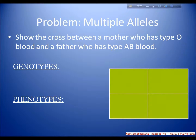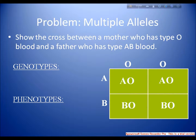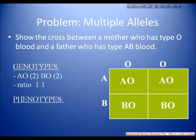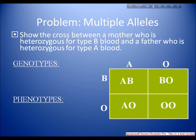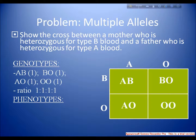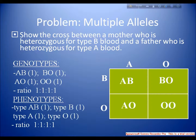For a cross problem: a mother with type O blood (genotype ii) crossed with a father with type AB blood (genotype IAIB) gives offspring genotypes IAi and IBi — a ratio of 1:1. The phenotypes are type A and type B, also in a 1:1 ratio. In another cross, a mother heterozygous for type B blood (IBi) crossed with a father heterozygous for type A blood (IAi) gives offspring: 1 AB, 1 B, 1 A, and 1 O — a genotype and phenotype ratio of 1:1:1:1.